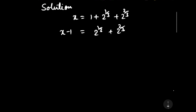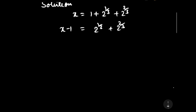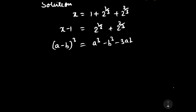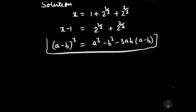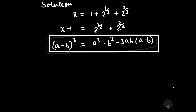To solve it further, we should know the identity: (a minus b) whole cube equals a cubed minus b cubed minus 3ab times (a minus b). With the help of this identity, we will solve it further.